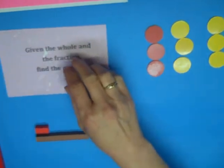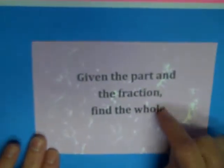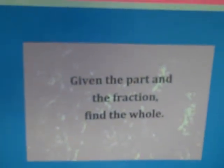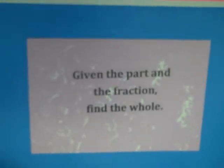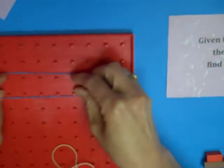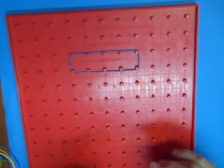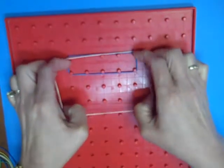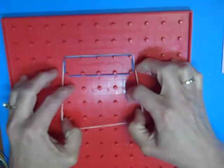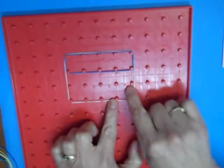Now if I change my question. Now I'm going to give you the part and the fraction. Now I'm looking for what does the whole look like. So if this is one-third, what does my whole look like? Well, if that's a third, I have to have three of equal size. So the white is the whole.